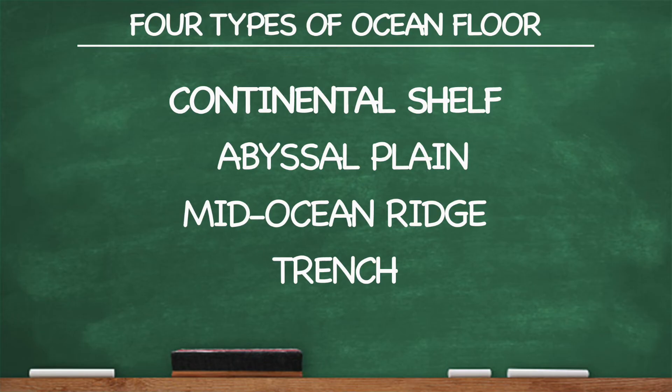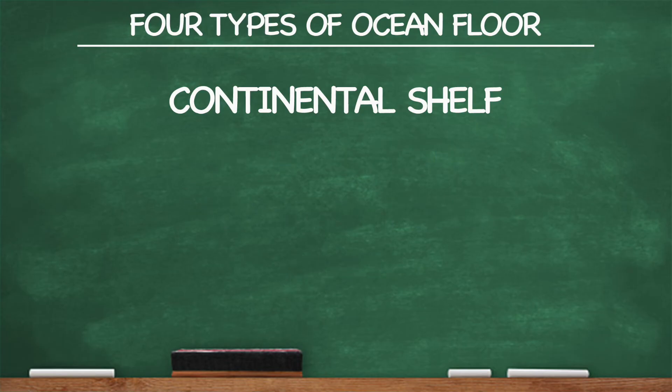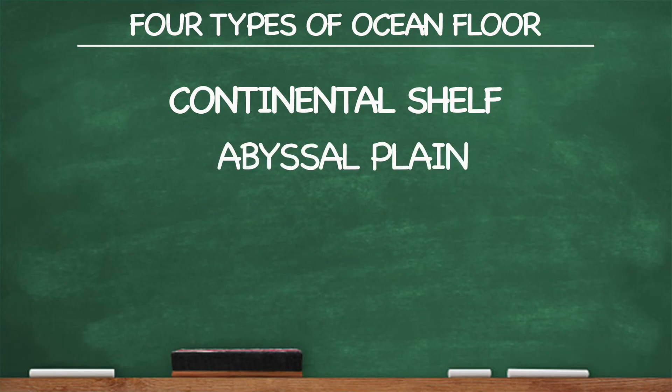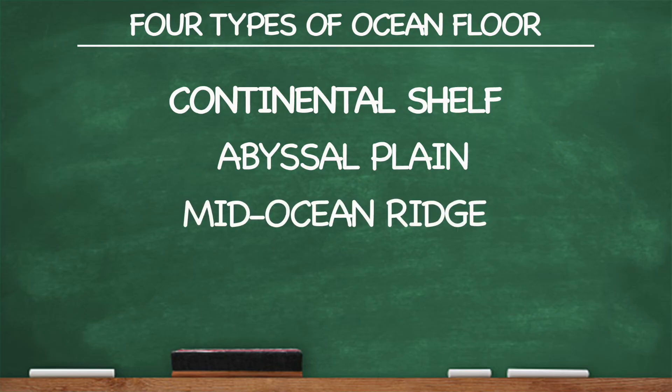Let's try it again. What are four types of ocean floor? Continental Shelf, Abyssal Plain, Mid-Ocean Ridge and Trench.